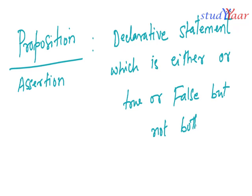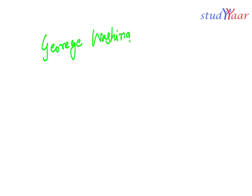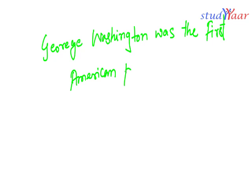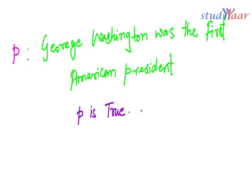For example, consider the statement: 'George Washington was the first American president.' This is an assertion because it is indeed correct. We can call this statement P, and P is a proposition which stands for 'George Washington was the first American president.' We know that P is true, therefore P is a proposition.